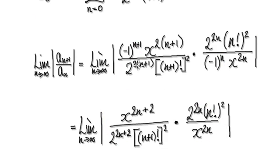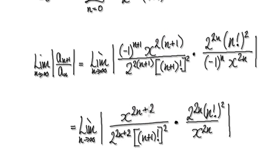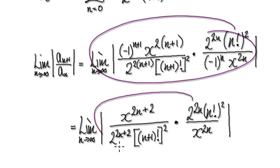Ignoring those two will then take you to the next step. Also, multiply this out: 2 times n gives 2n, 2 times 1 gives 2. Then looking at this times this, and this times this — that will give you this result. So this expression here will then take you to the next line.